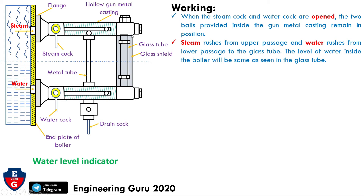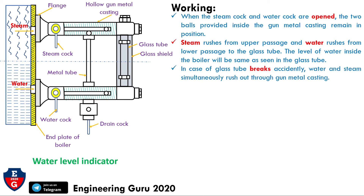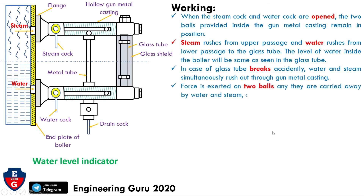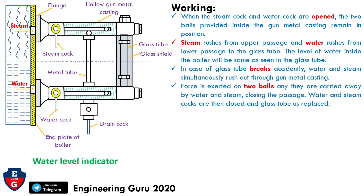The level is checked by the glass tube. In case the glass tube breaks accidentally, water and steam simultaneously rush out through the gun metal casting. A force is exerted on the two balls and they are carried away by the water and steam, closing the passages. The water and steam cocks are then closed and the glass tube is replaced. The direction of the cocks becomes horizontal when closed, and we can then replace the damaged glass tube.